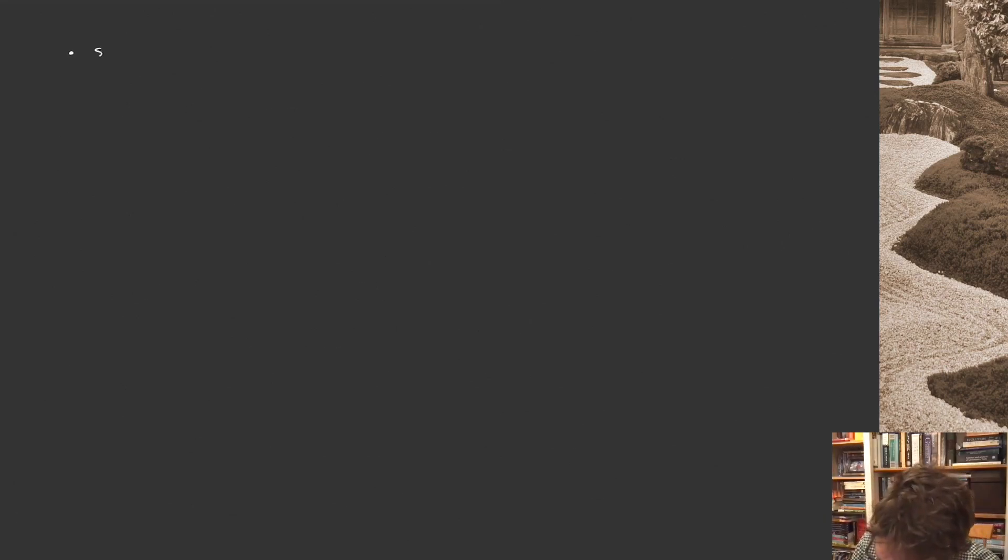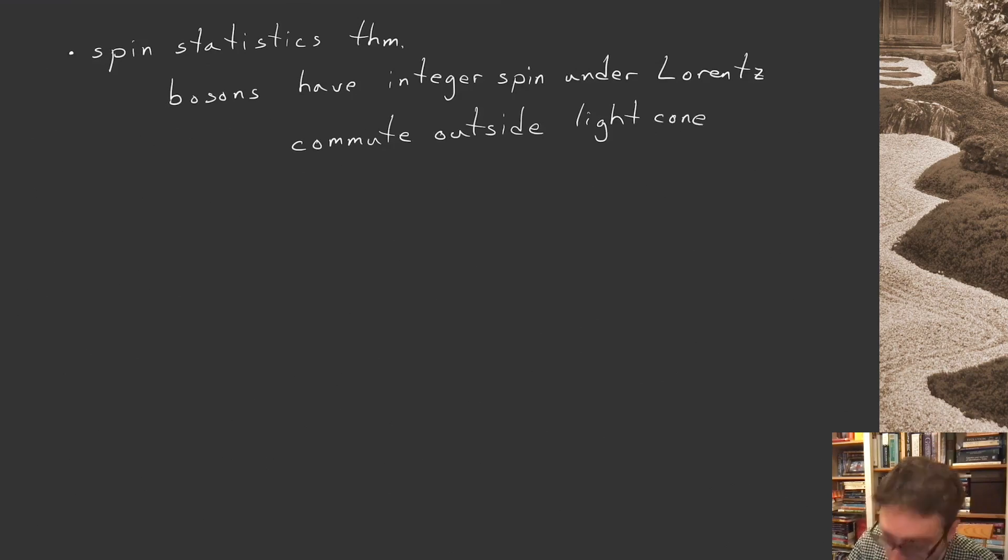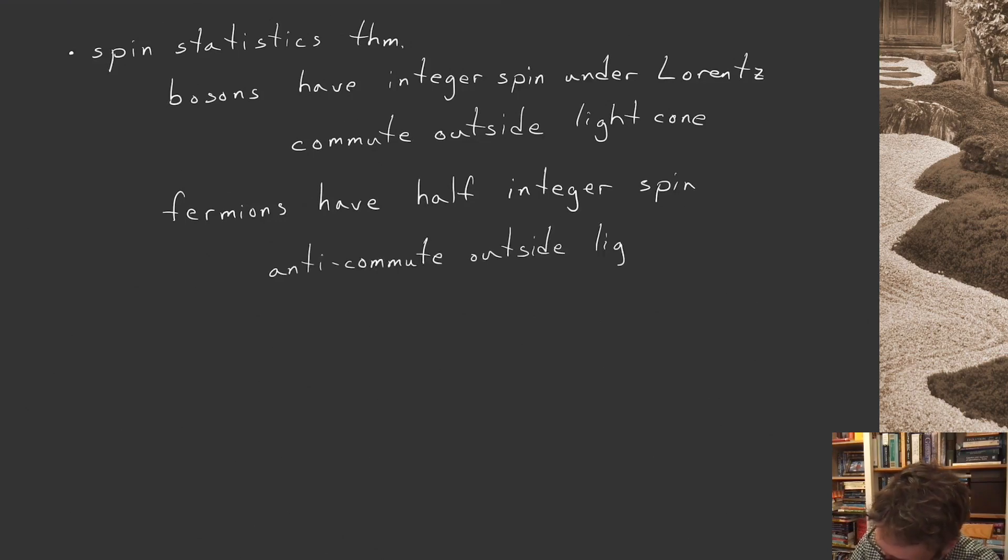If we consider the spin statistics theorem, that's this idea that bosons, that there's a relationship between whether it's a boson and a fermion, what the spin of the object is, that the bosons have integer spin under Lorentz, and they commute outside the light cone. So if you have some two bosonic operators that are separated spatially, they are not in causal contact with each other, then their corresponding operators, quantum fields, will commute with each other. Fermions, in contrast, have half-integer spin, so one-half or three-halves. And instead of commuting, they anti-commute, they anti-commute outside the light cone. So it's a critical difference between fermions and bosons.